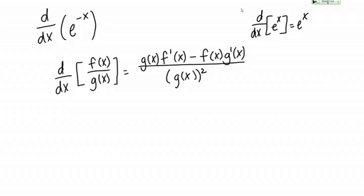So e to the negative x doesn't look like a quotient. So you might be thinking, why are we going to use the quotient rule on e to the negative x? Well actually e to the negative x can be written as a quotient if you remember your rules of exponents.